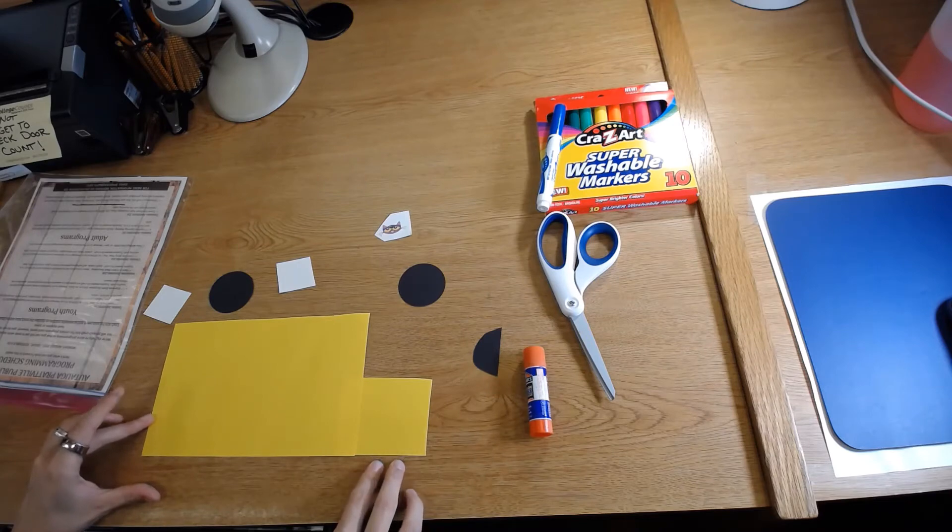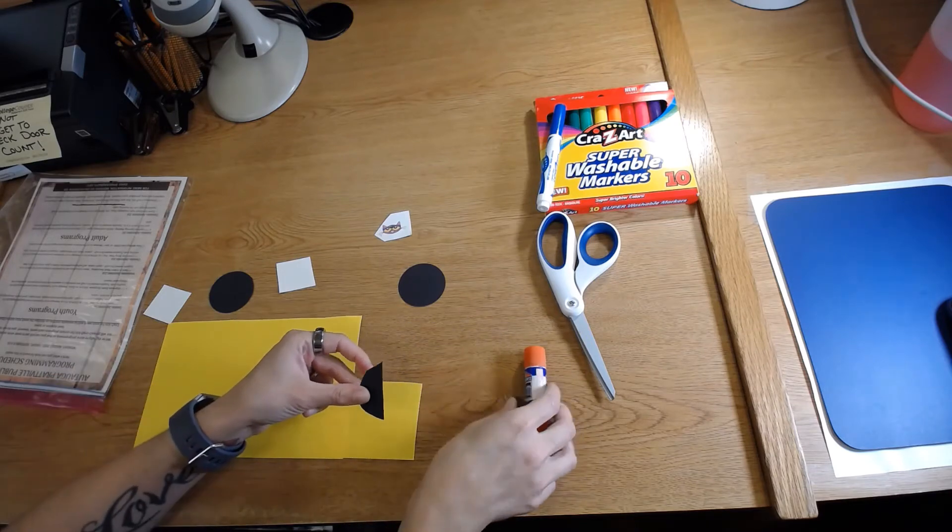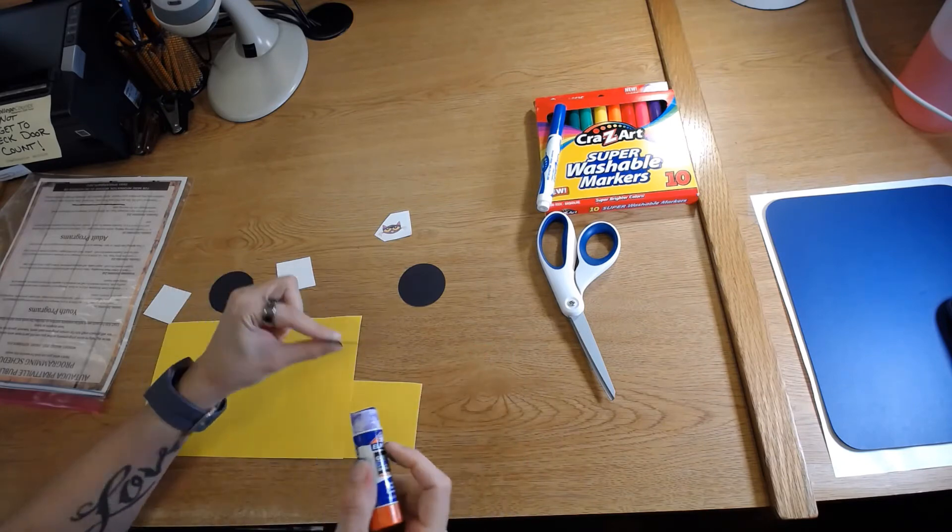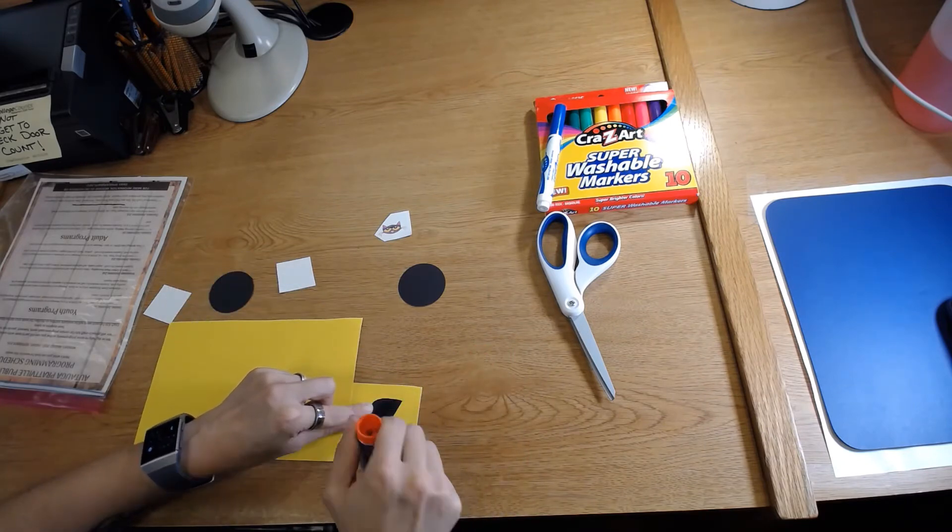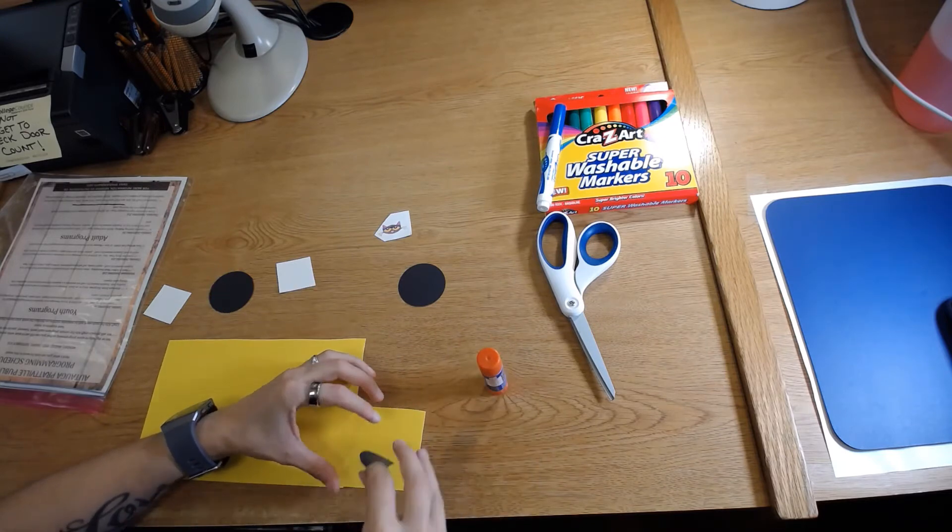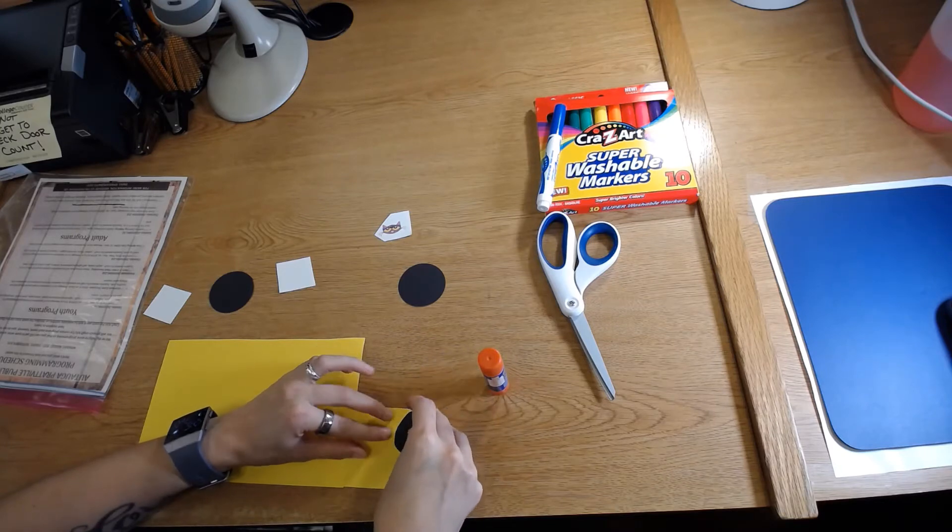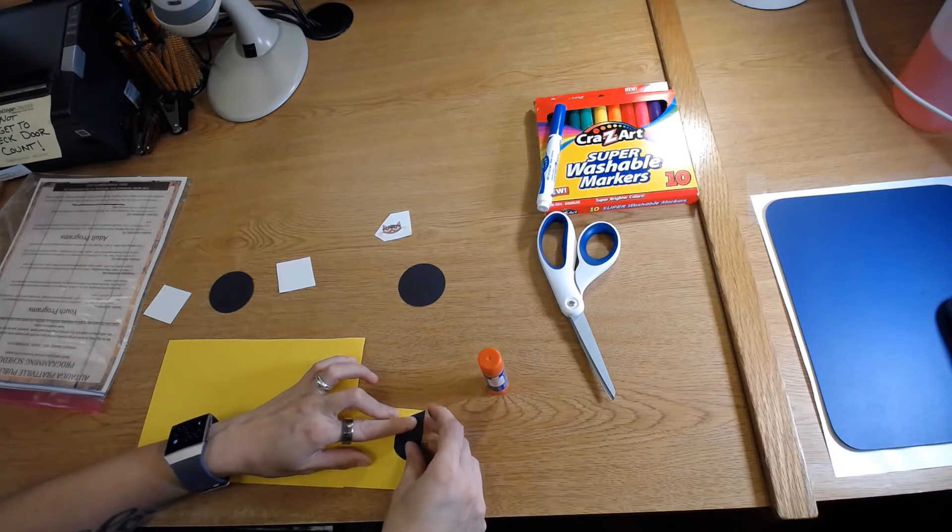Then this is going to be the headlight. You can make it a little bit smaller, you can trim it down with your scissors if you want, or you can just glue it on as is. I'm going to glue mine on as is, put it right on the very front because we want our headlights to be able to project the light out the front of the bus so they can see where they're going, right?